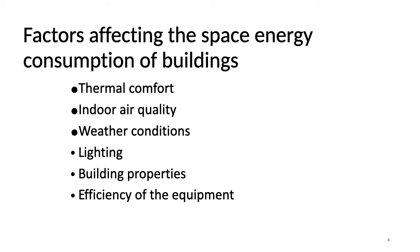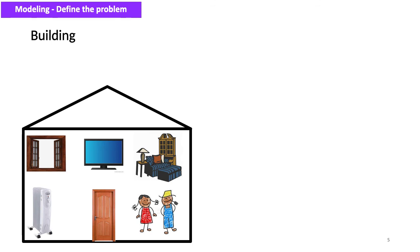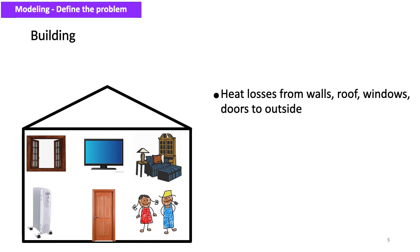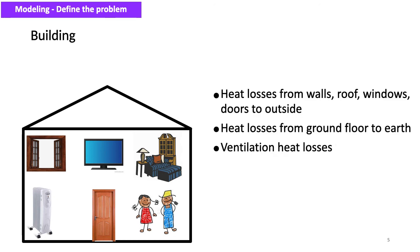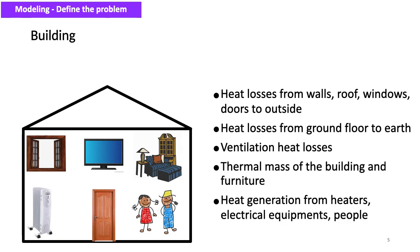Here is the building system we are interested in modeling. The whole building is considered as one unit, and we are going to address heat losses from walls, roof, windows, and doors to the outside; heat losses from the ground floor to the earth; ventilation heat losses; thermal mass of the building and furniture; and heat generation from heaters, electrical equipment, and people.